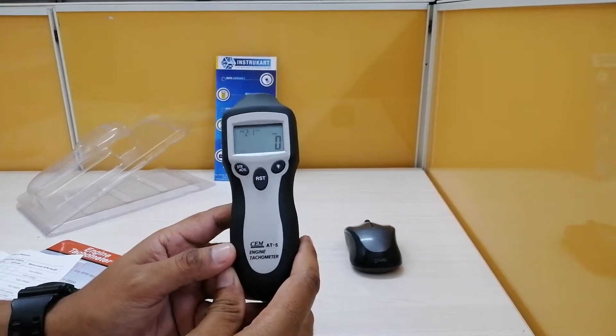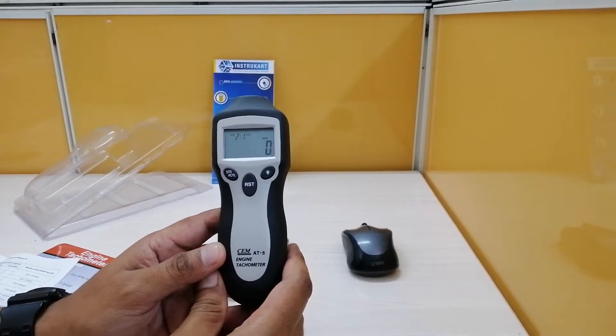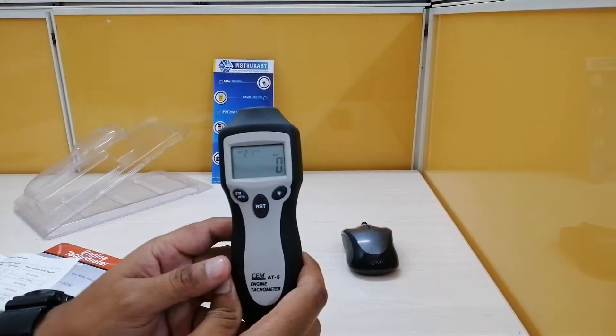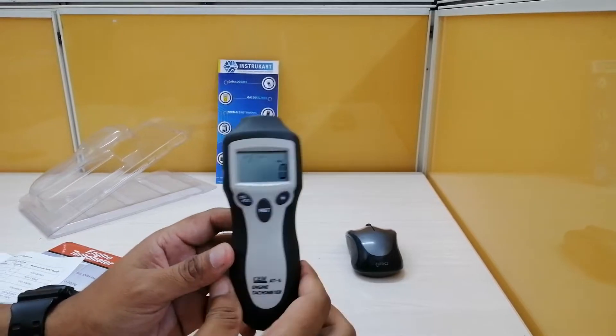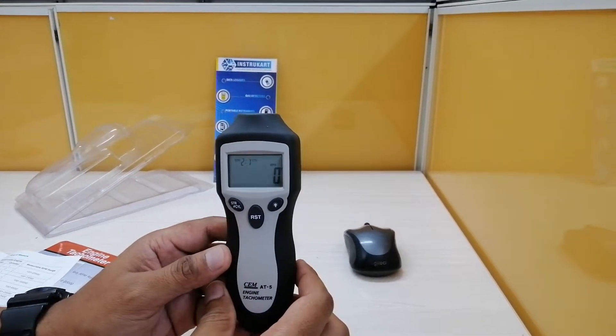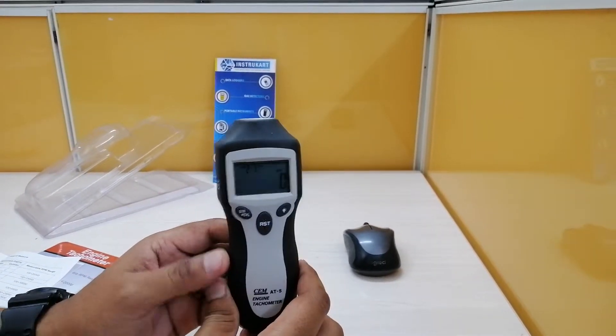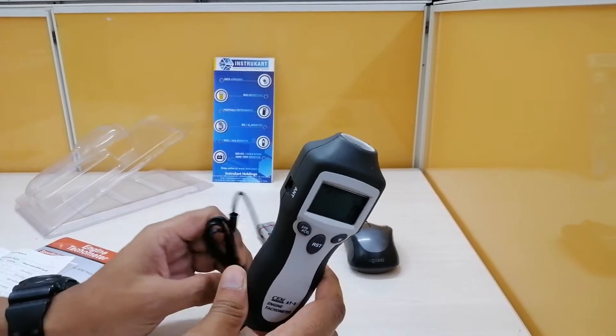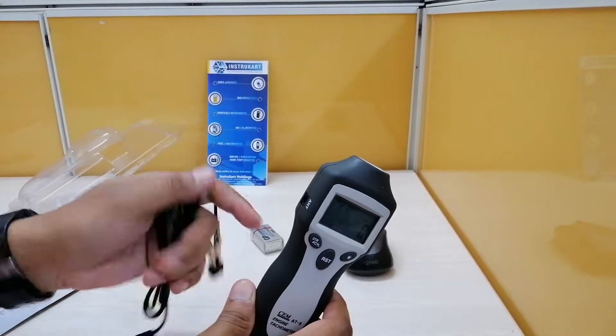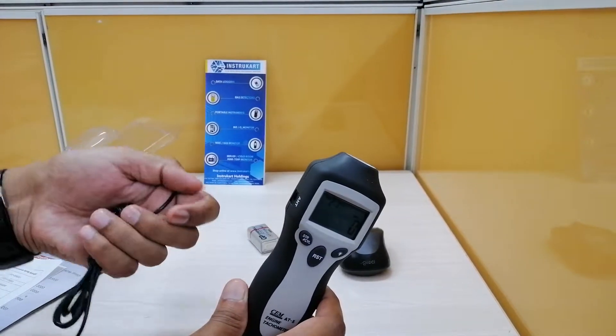Now this engine tachometer can measure RPM of engine by bringing it close to the power cord of the engine. This tachometer has many measuring modes for various types of engines like two stroke, four stroke, and also it is provided with an antenna lead to use whenever required.